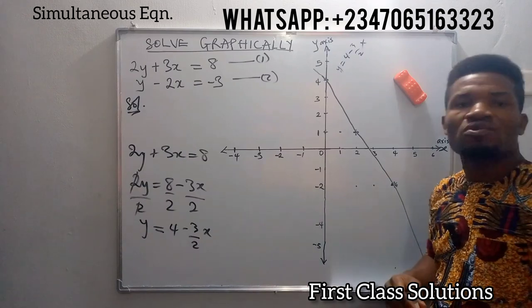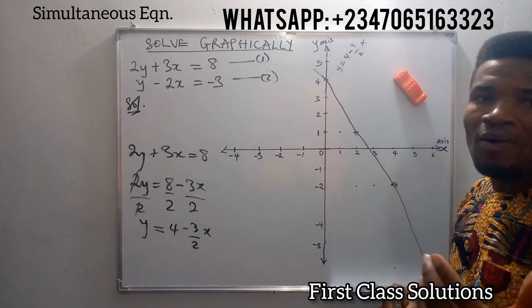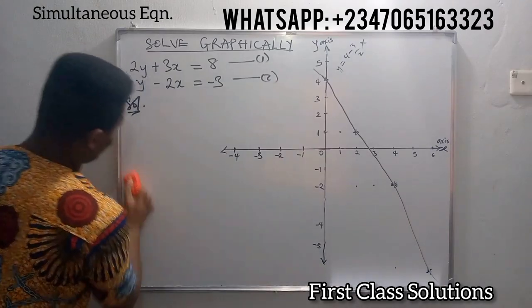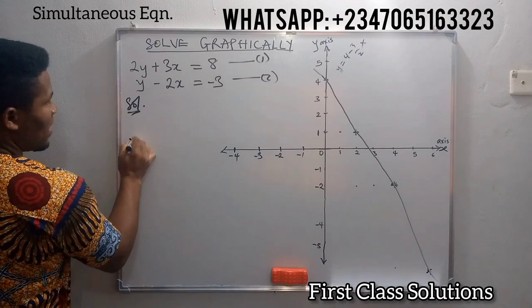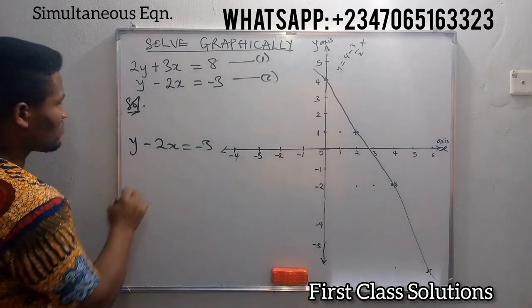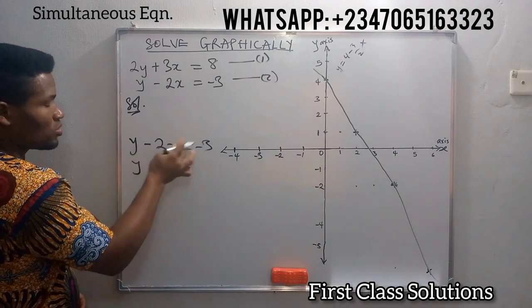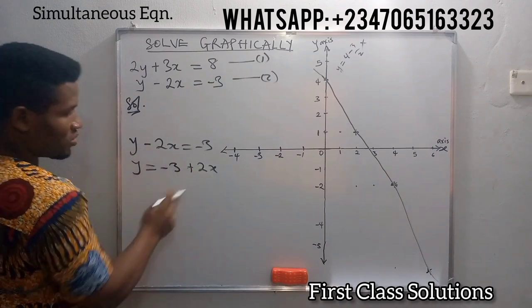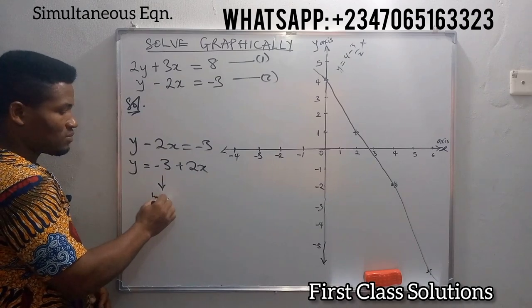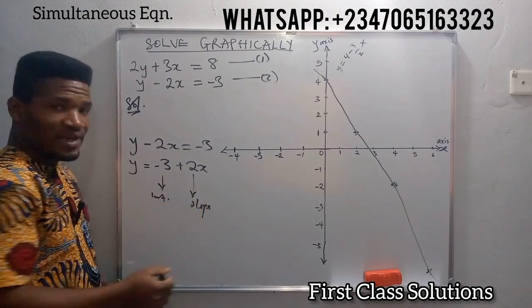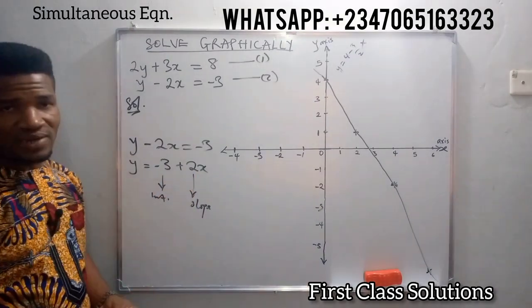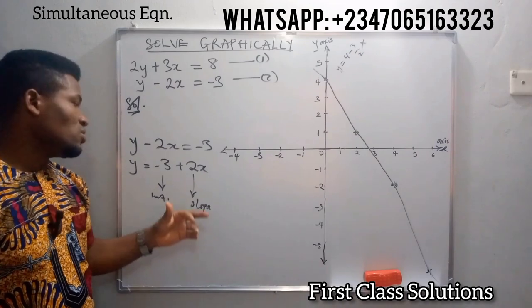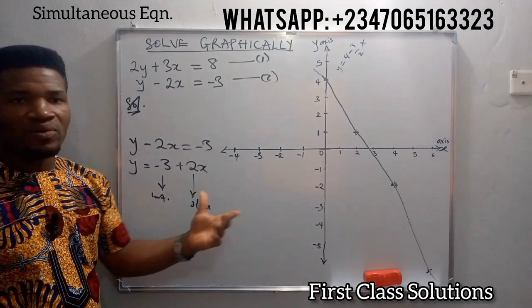At the place where our first and second equation meet, that will determine which values our x and y will have. In our second equation we have y minus 2x equals to minus 3. Making y the subject, we take minus 2x to the other side: y equals to minus 3 plus 2x. Here we have our intercept, and here we have our slope or gradient. This 2 is the same as 2 over 1, meaning dy/dx is 2 over 1 — that is 2 steps on the y-axis and 1 step on the x-axis.